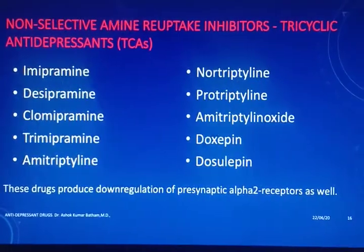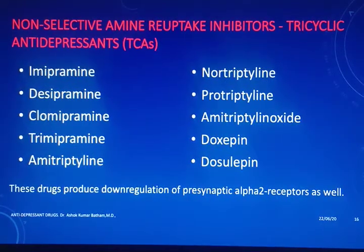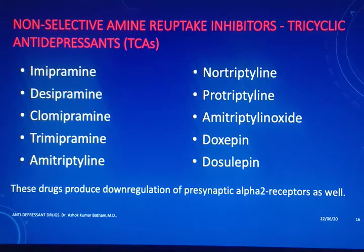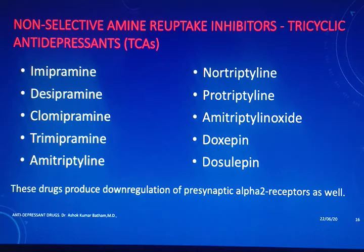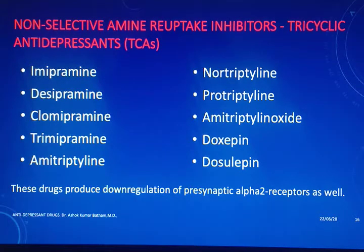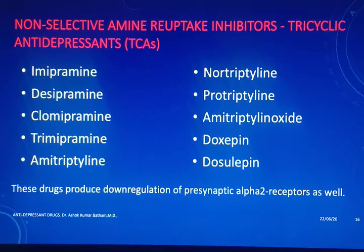Taking up the non-selective amine reuptake inhibitors, we have tricyclic antidepressants used for the last 70 years, from the early 1950s, starting with imipramine. The important ones include imipramine, desipramine, clomipramine, and trimipramine — similar-sounding names easy to remember. Another prominent name is amitriptyline, followed by nortriptyline, protriptyline, amitriptyline oxide, doxepin and dosulepin.